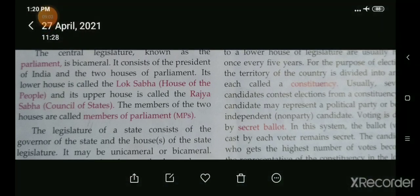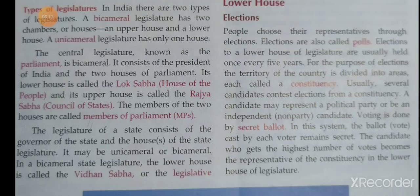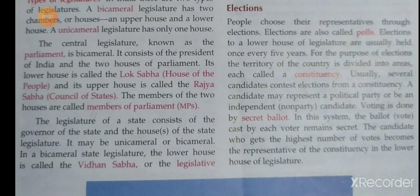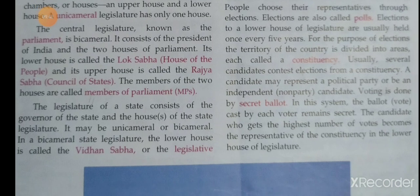Now let us see how the legislature works. The legislature has to meet at least twice a year. The meetings of a state legislature are summoned and closed by the governor of the state. Time is allotted for question hour, zero hour, etc.